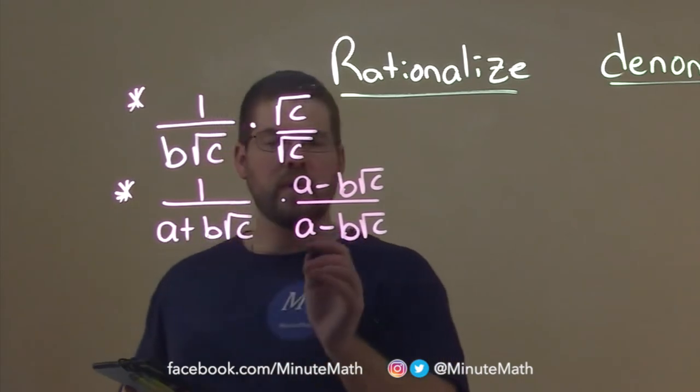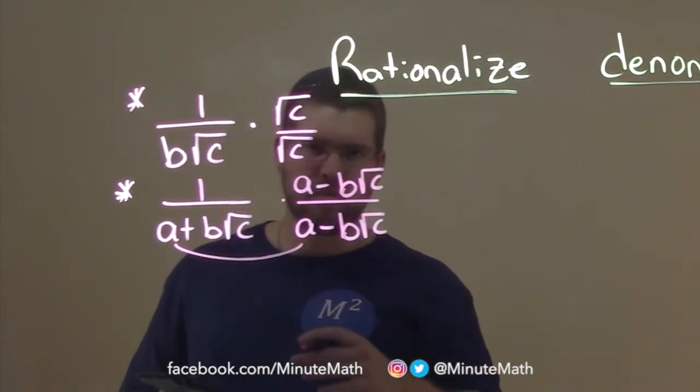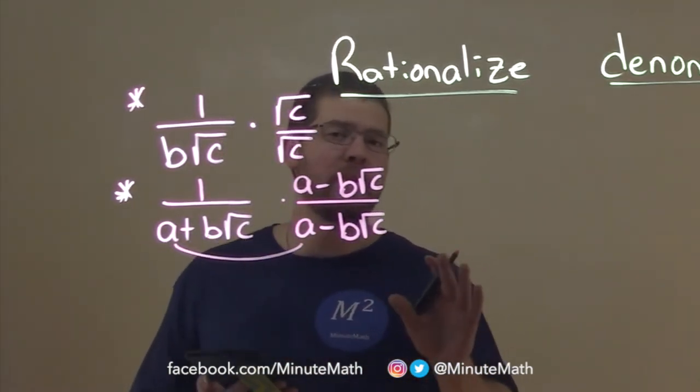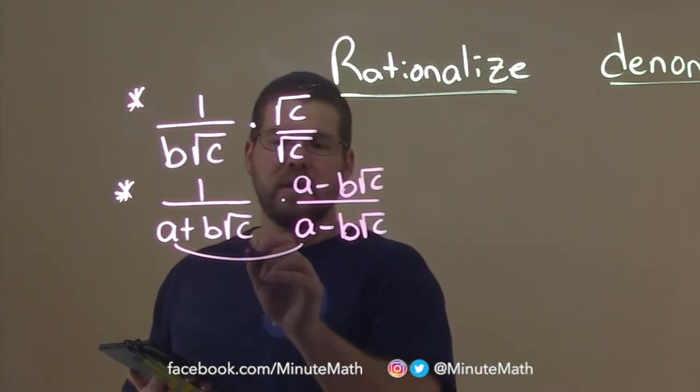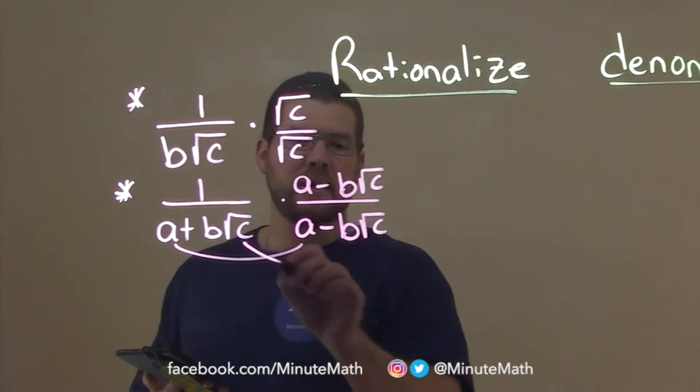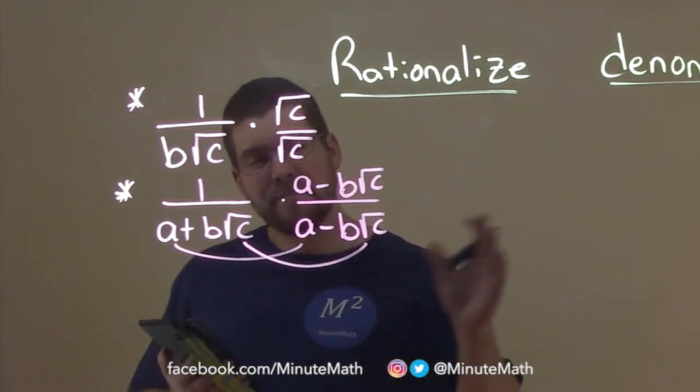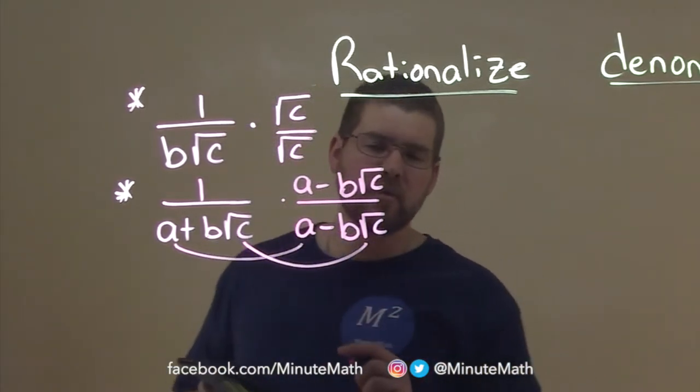And hopefully we can see this, but when we multiply this out, a times a is just going to be a squared. Great. Doesn't really matter. We just want to make sure we don't have a square root in the denominator. And then b square root of c times b square root of c, they multiply, square root of c's will cancel. But here's where the beauty happens.